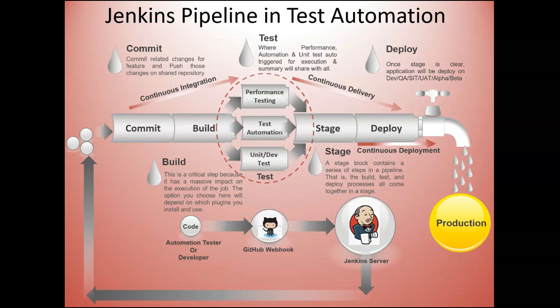In the industry, many people consider continuous integration and test automation a game-changing combination for development. That's why companies are making the move to include this methodology in their test automation setup. At its core, continuous integration helps ensure that a build is verifiable. This method helps developers determine whether or not a build is ready and if they can move on to the next step. Automation makes it simple to determine this and get results quickly.